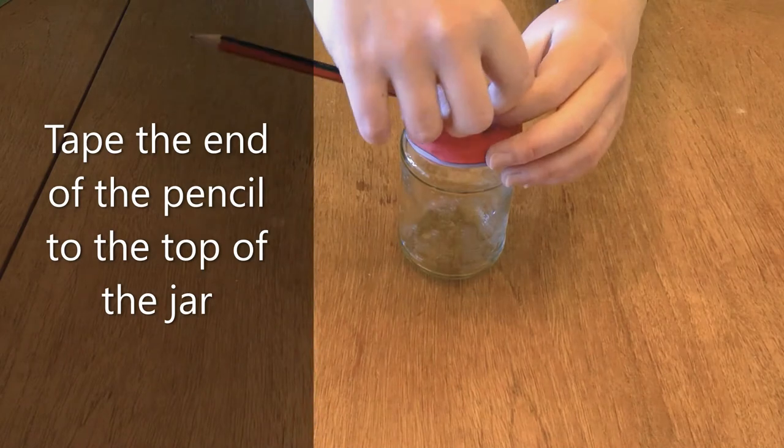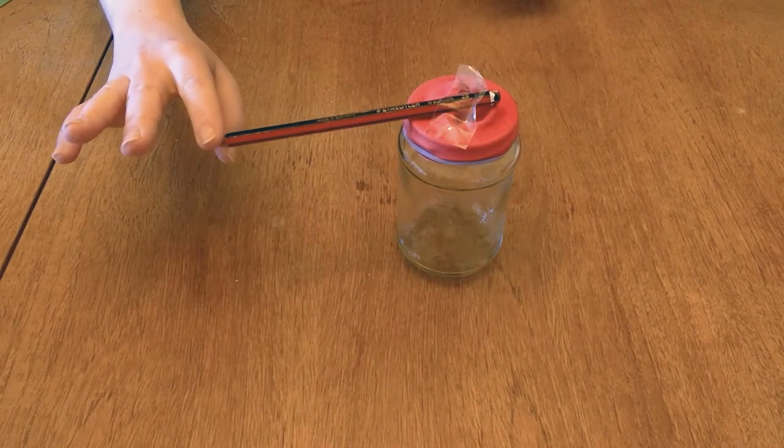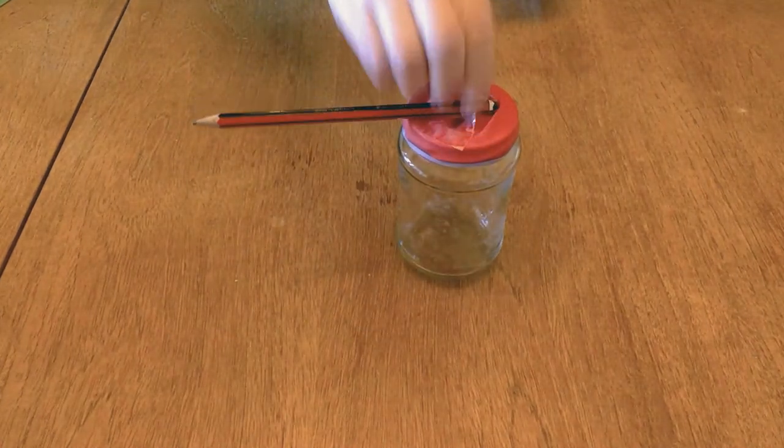Now I'm going to tape my pencil onto the top of the jar, and as the air pressure outside changes, it's going to make the pencil go up and down as it pushes against the jar inside.